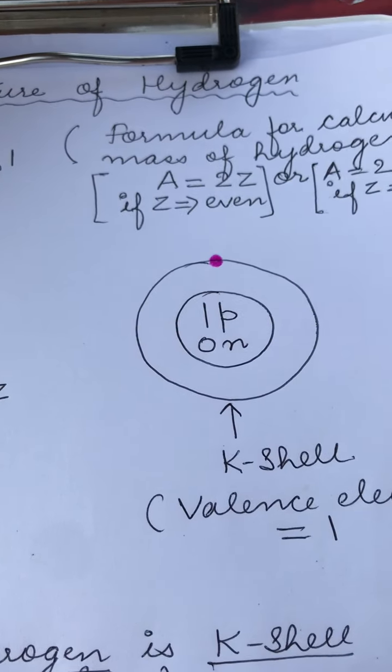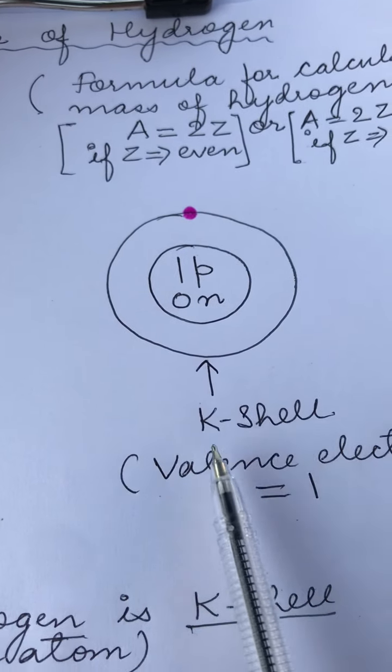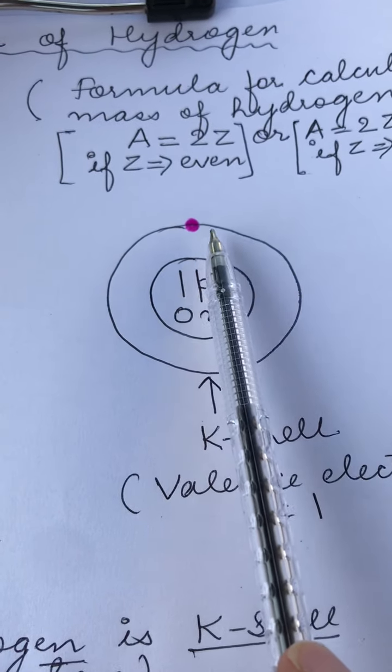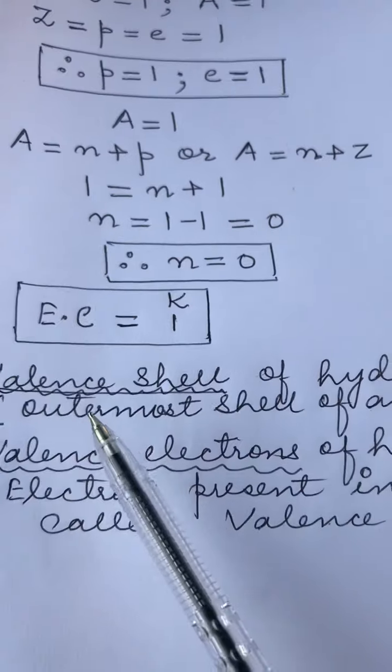Now there is one more very important point here that the outermost shell of the atom, here we have outermost shell as the K shell and the number of electrons present in this K shell is 1. So there is a term that we use for the outermost shell and that is known as valence shell.